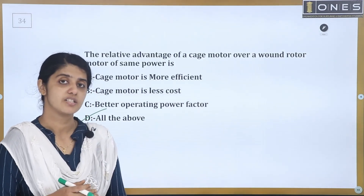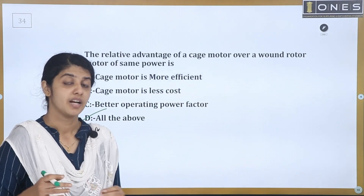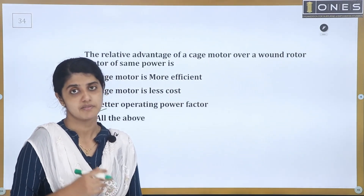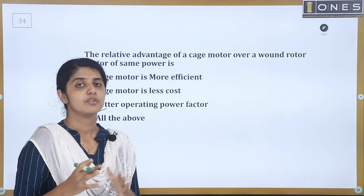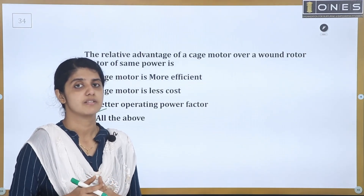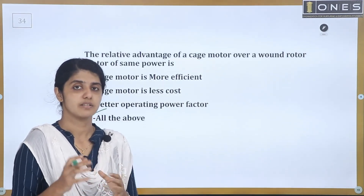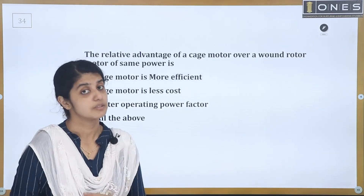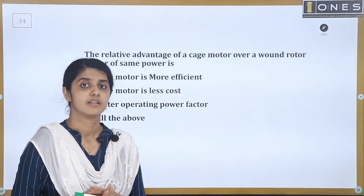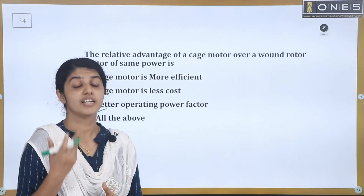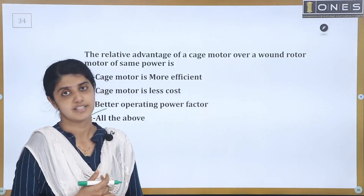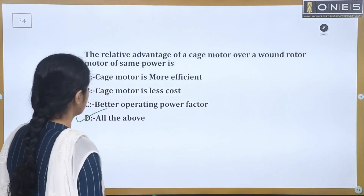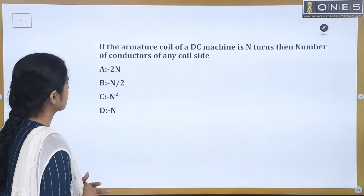With slip rings, you need a speed controller and the slip rings are connected with a resistance. To adjust the starting torque, you connect resistance to the slip rings, which increases the cost. That is why the slip ring induction motor costs more.